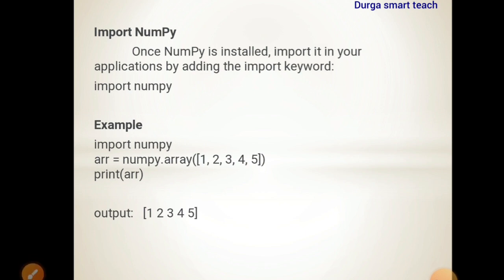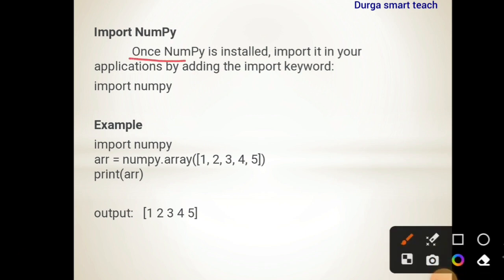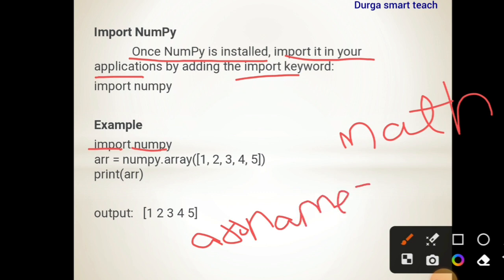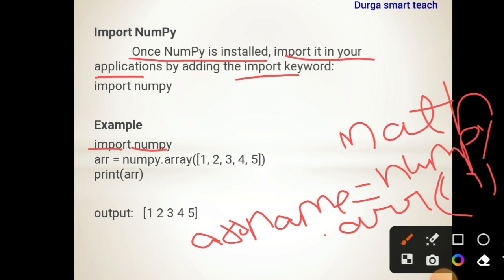After installing NumPy, open your Python editor. Once NumPy is installed, import it into the application by adding the import keyword. Just as you import the math module to perform mathematical operations, you need to import NumPy library to create arrays or perform array operations. So use: import numpy. For creating an array, the syntax is: array_name = numpy.array([elements]). For example: arr = numpy.array([1, 2, 3, 4, 5]). Here 'arr' is the array name, 'numpy' is the library, and 'array' is the function used to create arrays.